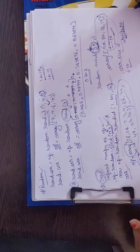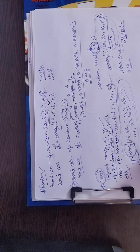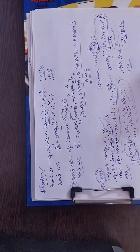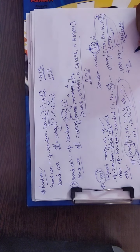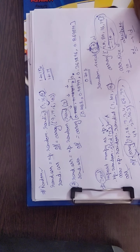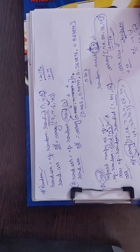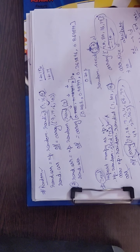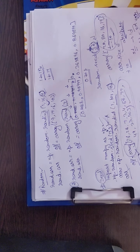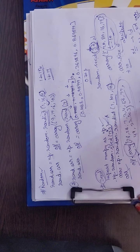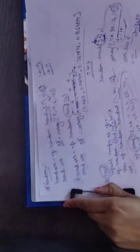अगला function है reshape function। Reshape function क्या करता है — अगर आपने 2D matrix बना रखी है तो आप उसे 1D में change कर सकते हो, या 1D है तो 2D में। अगर आपने 3×4 की form में बना रखा है तो आप उसे 4×3 या 4×2 की form में भी convert कर सकते हो — क्योंकि total elements equal होने चाहिए।